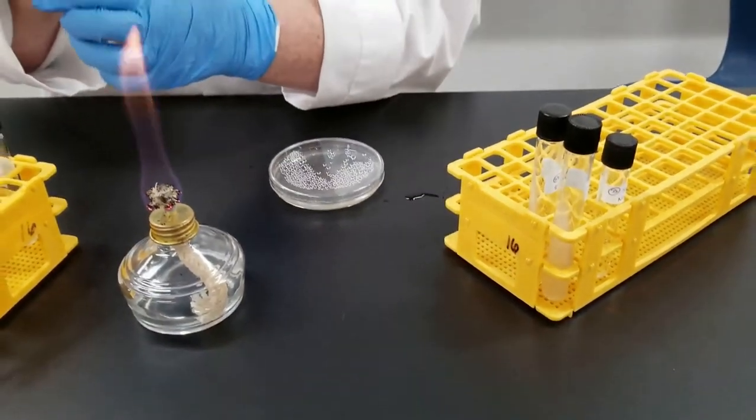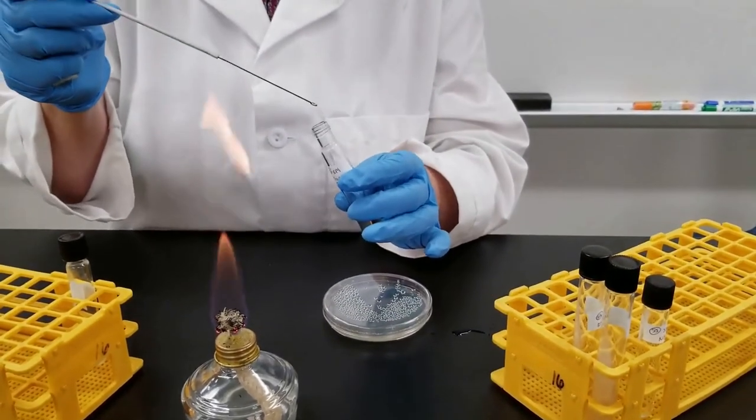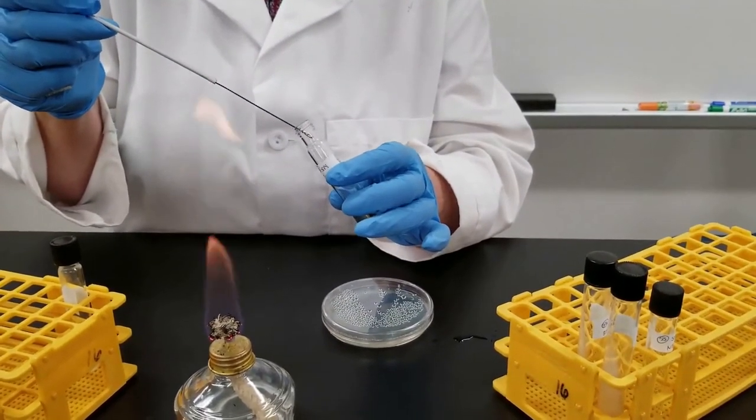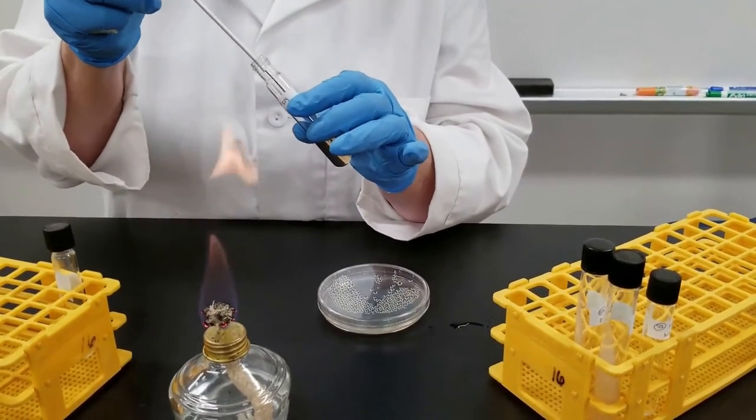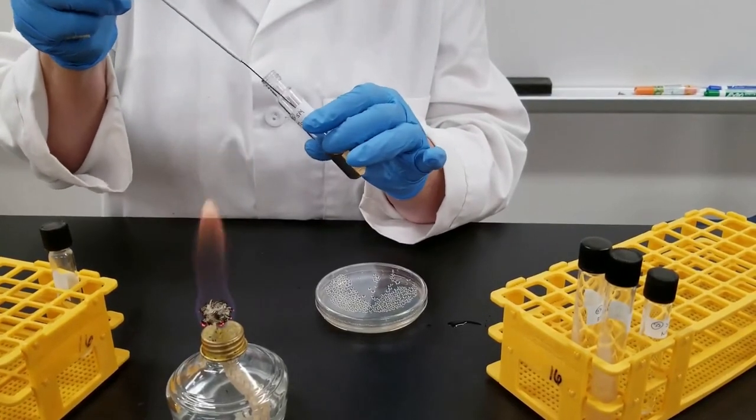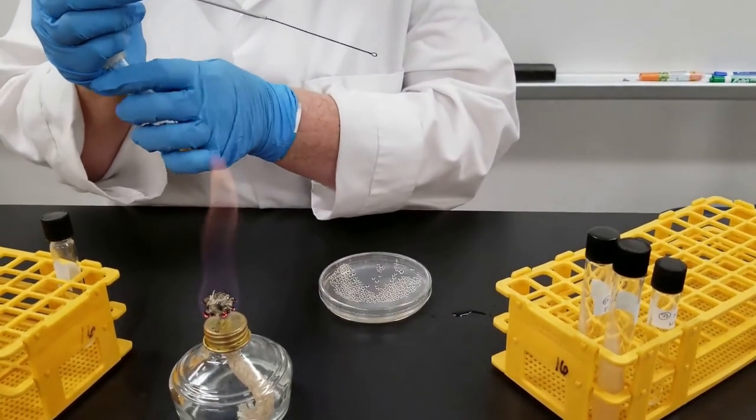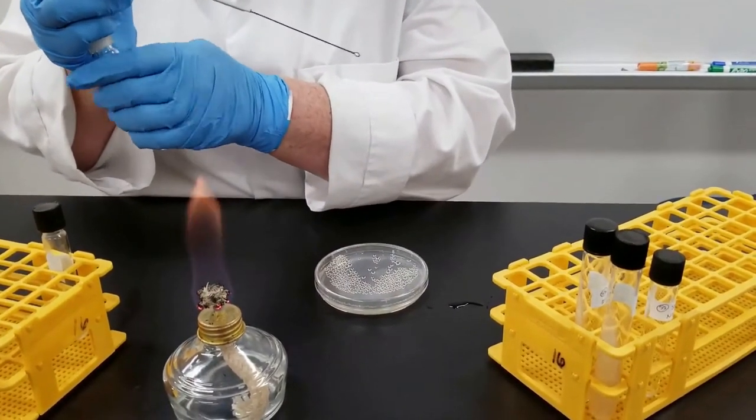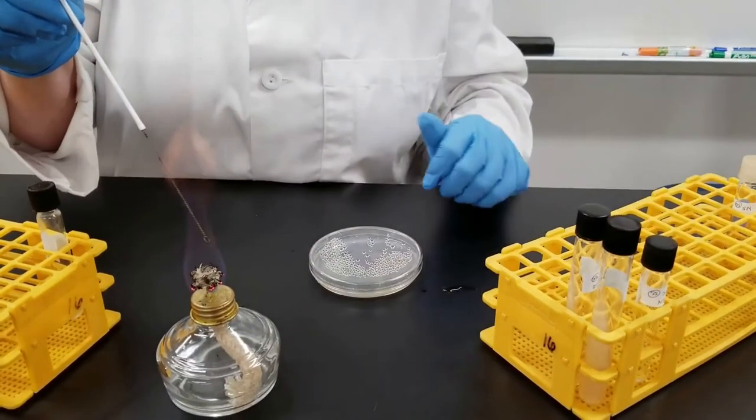With the thioglycollate, you want to obviously flame the tube before you go in. Bring the loop in. Just move it up and down a couple of times in there. Oftentimes when you're using a broth, you may want to touch the loop on the inside of the tube to make sure that the liquid does all be released from that loop and you're not carrying over.